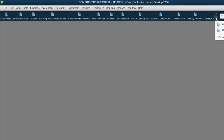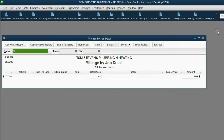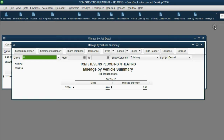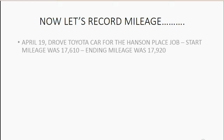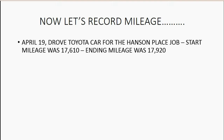If you run out of room in the icon bar, QuickBooks gives you a double arrow with a pull-down menu where you can click for extra icons that don't fit. Now we're ready to record our first set of mileage. On April 19th, we drove the Toyota car for the Hanson Place job. The starting mileage was 17,610 and the ending mileage was 17,920, and it is not billable to the job.